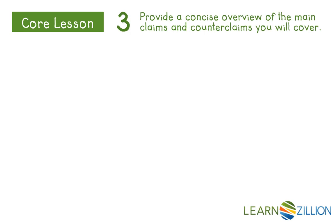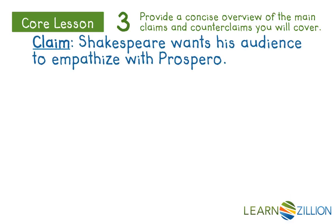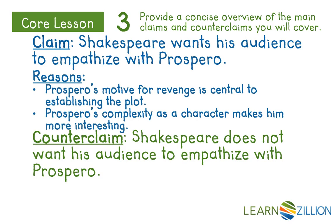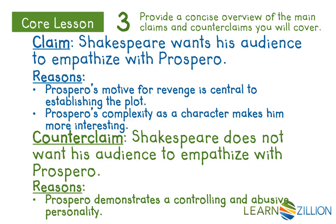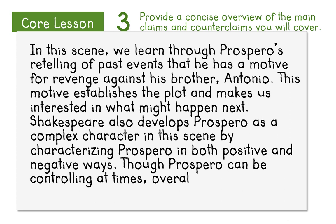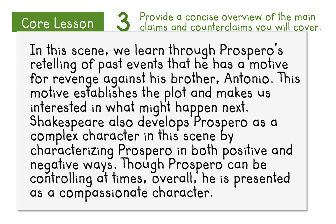Now I want to make sure I set my reader up for my thesis by providing a concise overview of any claims or counterclaims I'll be covering. In this literary essay there is really only one main claim and one main counterclaim — essentially a yes or no response to the prompt question. The reasons supporting my claim are that Prospero's motive for revenge is central to establishing the plot and Prospero's complexity makes the character more interesting. The counterclaim is that Prospero demonstrates a controlling and abusive personality. I just want to acknowledge that briefly — such as: "Though Prospero can be controlling at times, overall he is presented as a compassionate character" — acknowledging the other side but continuing with my argument.